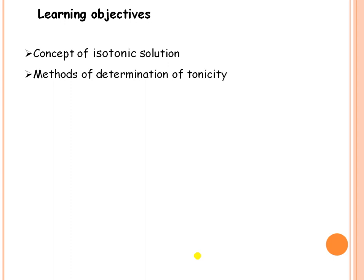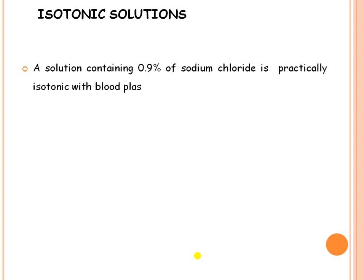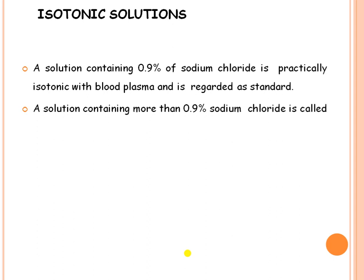A solution containing 0.9% of sodium chloride is practically isotonic with blood plasma and is regarded as a standard. When you add 0.9 grams of sodium chloride into 100 ml of water, it becomes isotonic with your plasma and blood. A solution containing more than 0.9% of sodium chloride is called a hypertonic solution.